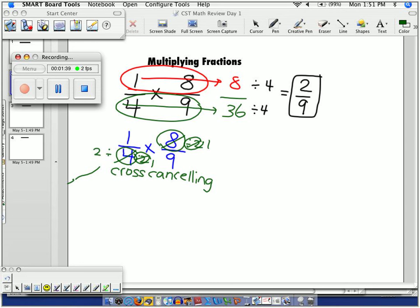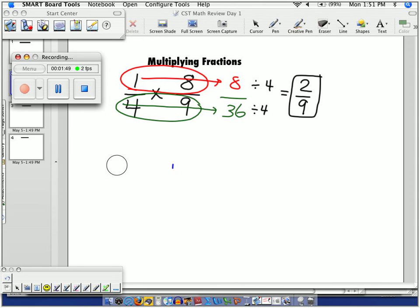1/4 times 8/9ths. Okay, divide this by 4. Divide this by 4. This ends up giving you 2. This ends up giving you 1.